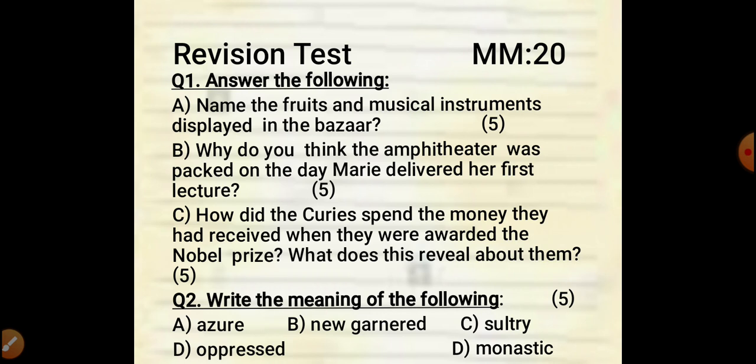Third: How did the Curies spend the money they had received when they were awarded the Nobel Prize, and what does this reveal about them? Five marks. Now, Part 2: Write the meaning of the following words.